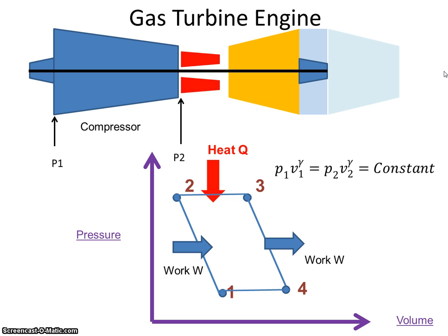And that's the Brayton cycle. We showed in a previous screencast that during compression and expansion there's no heat added. It's an adiabatic process, and in an adiabatic process the expression PV to the power of gamma is a constant. We're going to use that expression to calculate temperatures for the compressor.